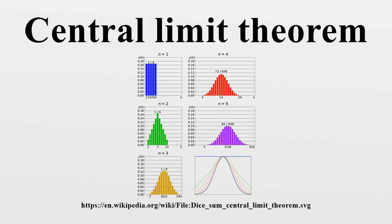In contrast, the sum of a number of i.i.d. random variables with power law tail distributions decreasing as x^(−α−1), where 0 < α < 2, will tend to an alpha-stable distribution with stability parameter α as the number of variables grows.